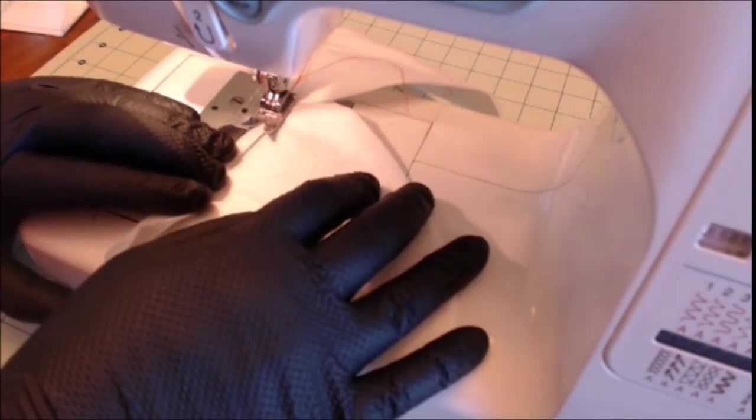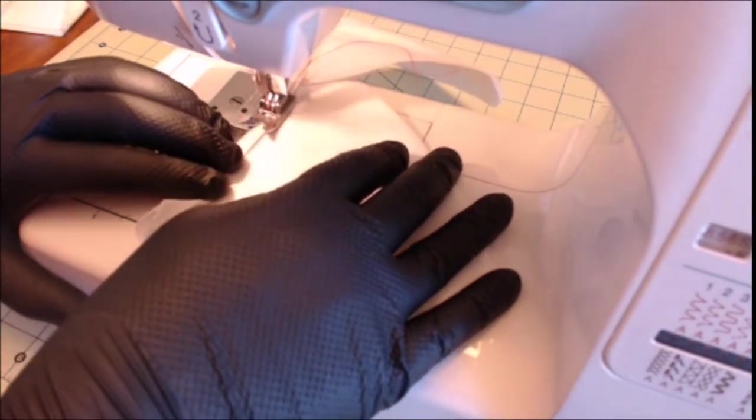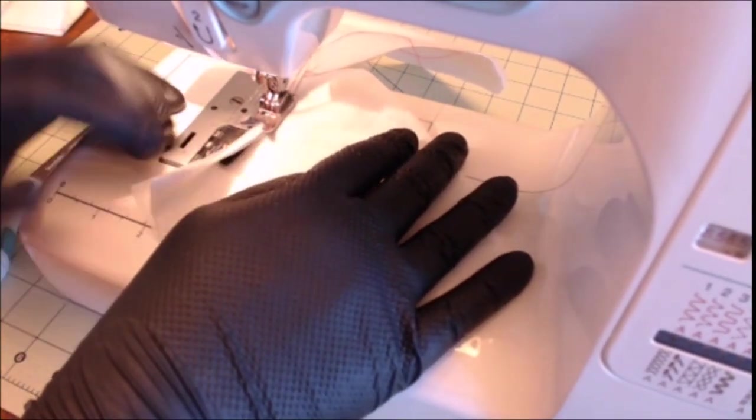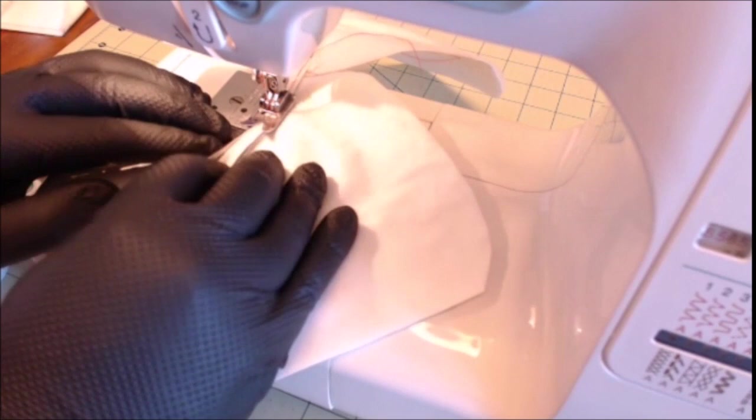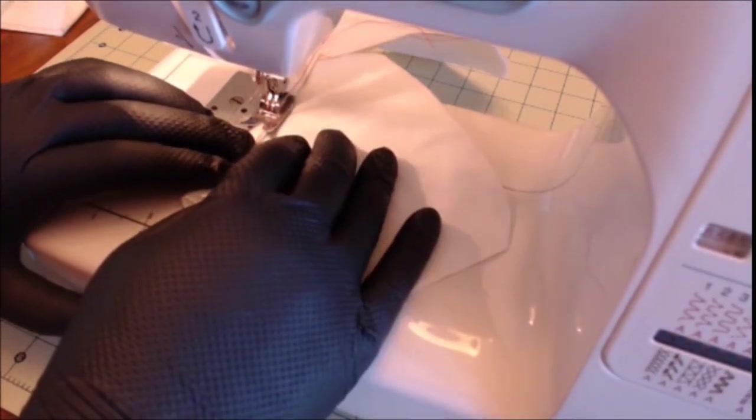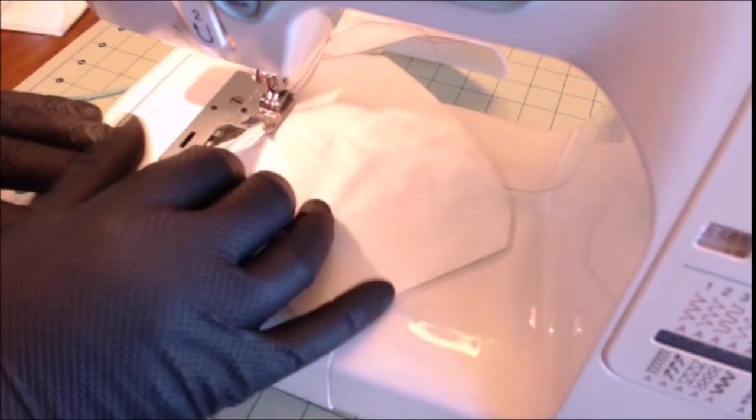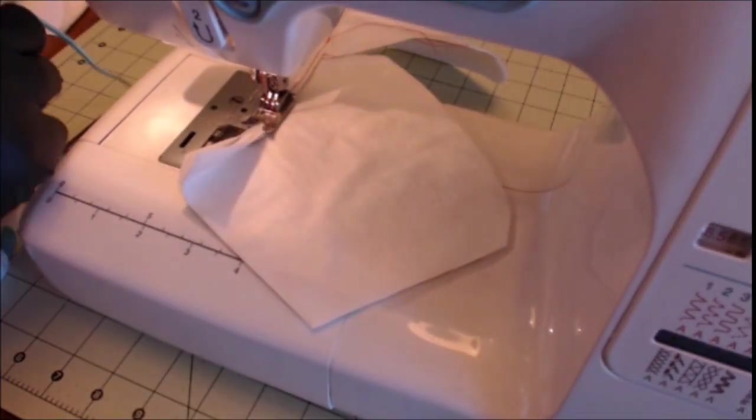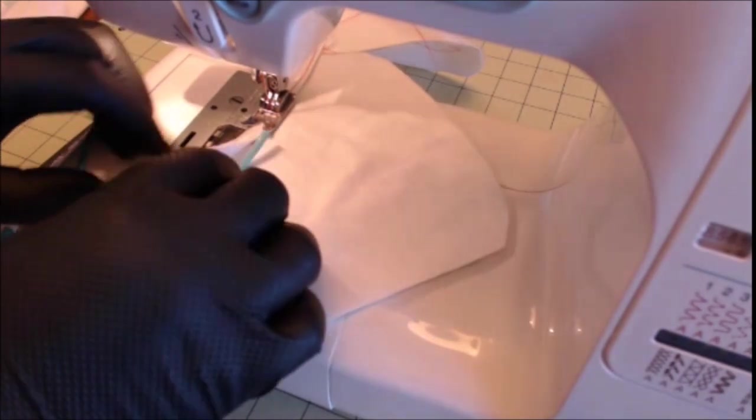Where the pipe cleaner ends about halfway down the face mask, stop sewing and then take the other end of the head wrap, that elastic piece, loop it around and stick it in at the end of the pipe cleaner. Fold it over and then continue the seam and lock it in place.